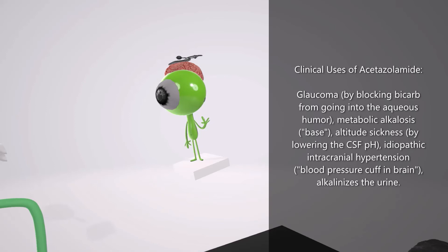This martian is very high up. Carbonic anhydrase inhibitors are used to treat altitude sickness, and they do this by lowering the CSF pH.